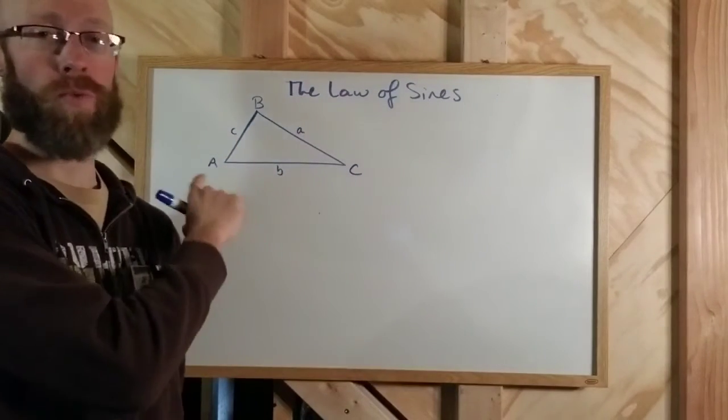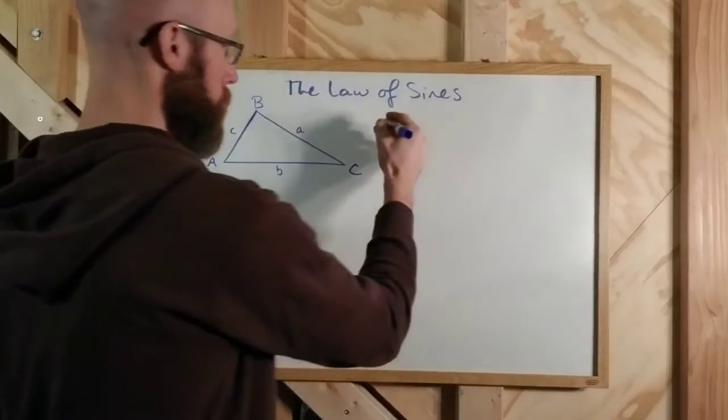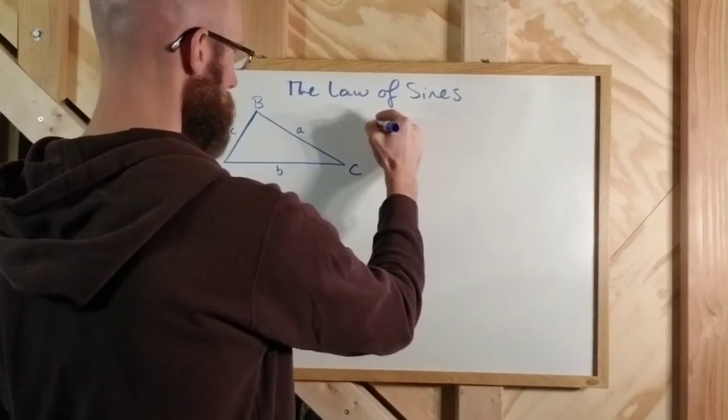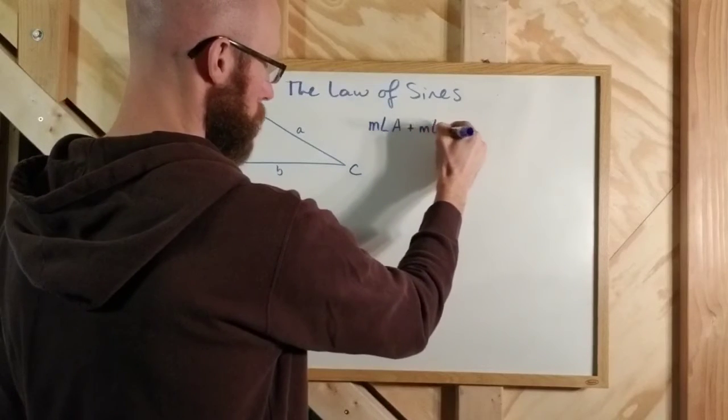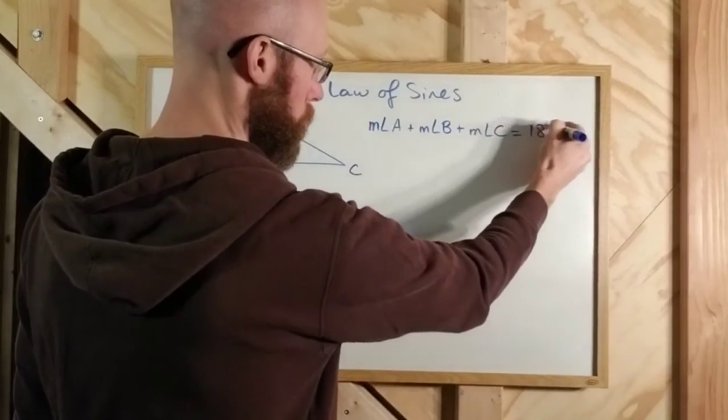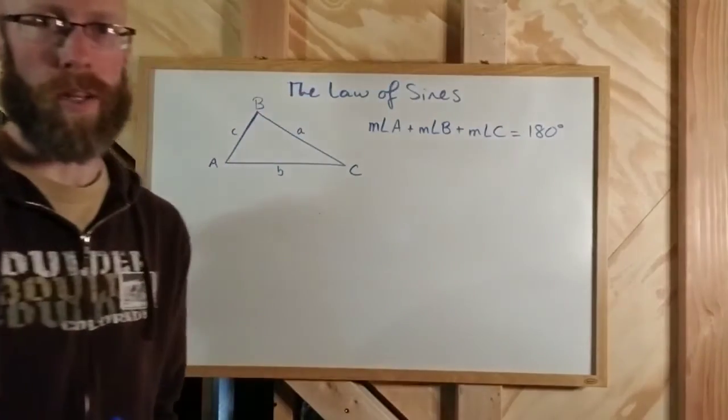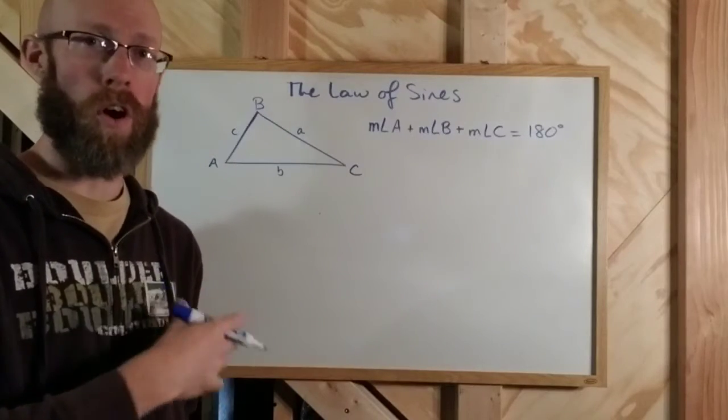Now again, there's no right triangle here. But the only thing we really know right now is that the sum of the measures of the three sides, measure of angle A plus the measure of angle B plus the measure of angle C must equal 180 degrees. Okay, so that's for any triangle. It doesn't have to be a right triangle. That's for all of them.